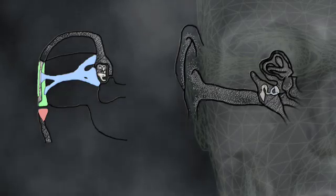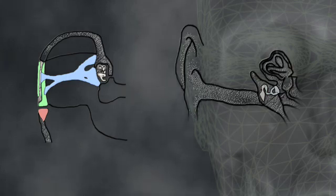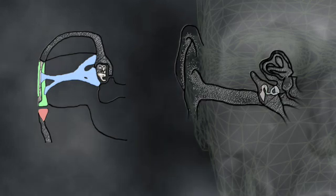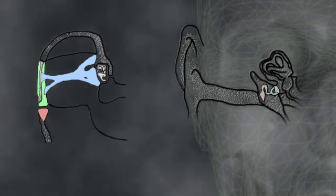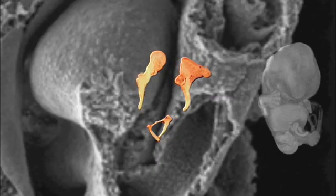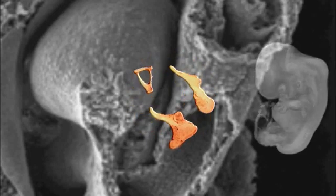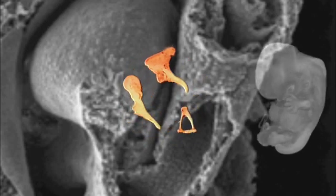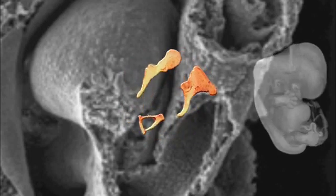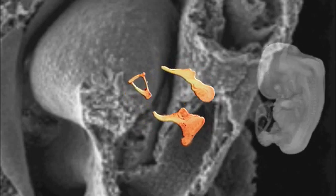It is worthwhile to pause here and examine a type of change that is often mentioned as impossible. It appears that two of the bones in the middle ear of mammals correspond to two bones in the jaw structure of reptiles — the green and red bones in these diagrams are the bones in question. If we look at the developing fetus, two developing bones in the reptile head become part of the jaw, while the corresponding bones in the mammal fetus become part of the middle ear.